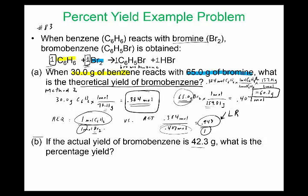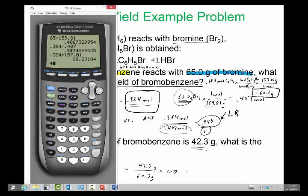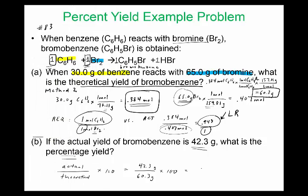If the actual yield is 42.3, what's the percentage yield? The formula is actual from the experiment divided by the theoretical amount times 100. This would be 42.3 divided by 60.3 times 100, and we get 70.1 percent. That's our percent yield.